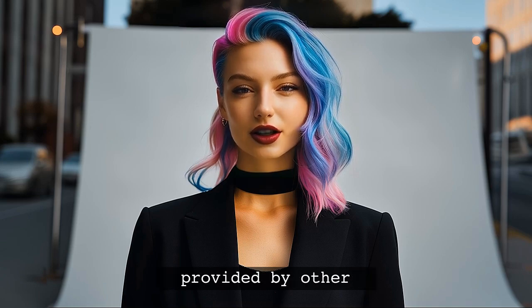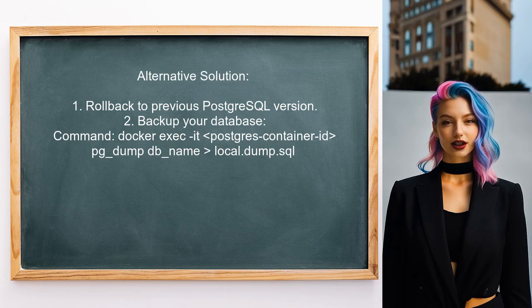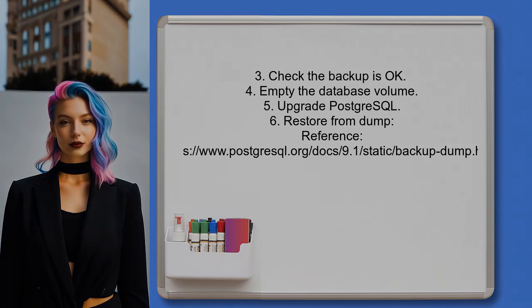Now let's look at the answers provided by other users. One alternative solution is to roll back to the previous version of Postgres. First, you can create a backup of your database by running a command in the container — use docker exec followed by your container ID and pg_dump to export your database to a local file. After ensuring that your backup is successful, you can then empty the database volume, upgrade Postgres to the latest version, and restore your database from the dump file.